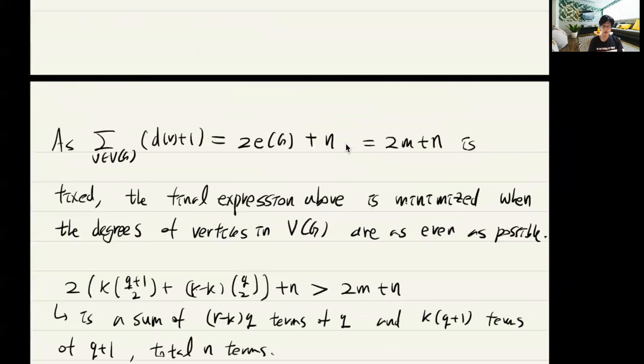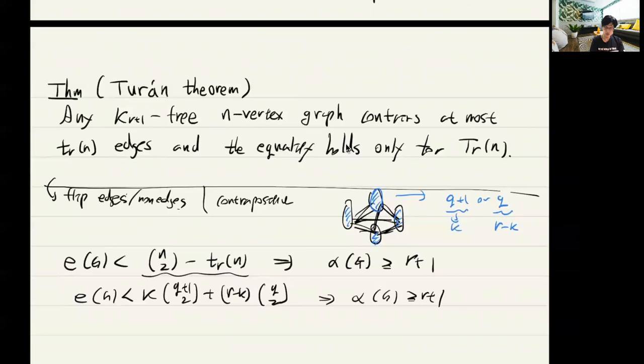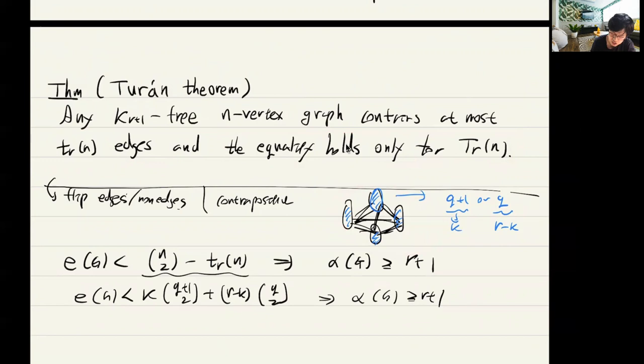This proves the Karo-Wei theorem, and therefore proves Turán's theorem. We can also prove the uniqueness part: equality holds only for the balanced complete r-partite graph. In other words, in the Karo-Wei theorem, equality only holds for the complement, which is a disjoint union of cliques.